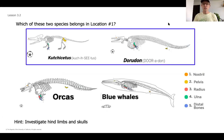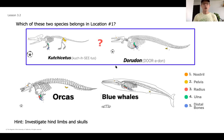Let's take a look at these two species — the Cuchicetus and the Dorudon. We're trying to figure out which belongs in location one, and what we do know is that the one that belongs in location one is going to be most closely related to the orcas and the blue whales. That key concept: the closer they are in the evolutionary tree, the more structures they're going to be sharing. Pause the video and examine those structures to see which of these two species are most similar to orcas and blue whales.